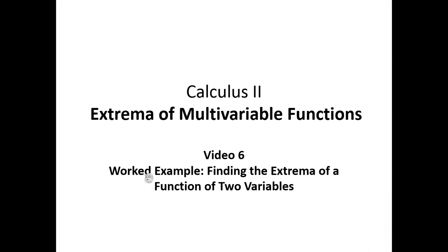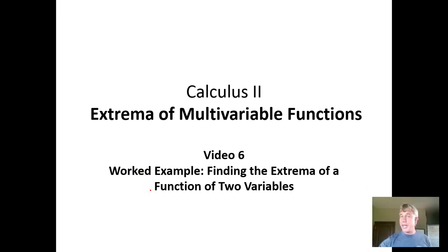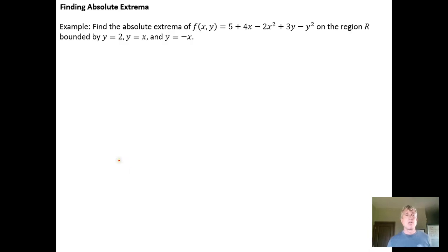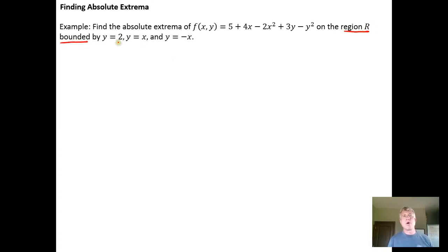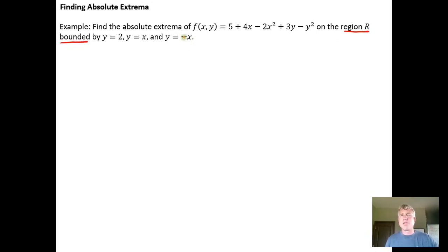In this video we're going to do a worked example for finding the extrema of a function of two variables. We want to find the absolute extrema for our function f(x,y) = 5 + 4x - 2x² + 3y - y² over the closed bounded region bounded by y=2, y=x, and y=-x. The first step is to get an idea of what this bounded region looks like.